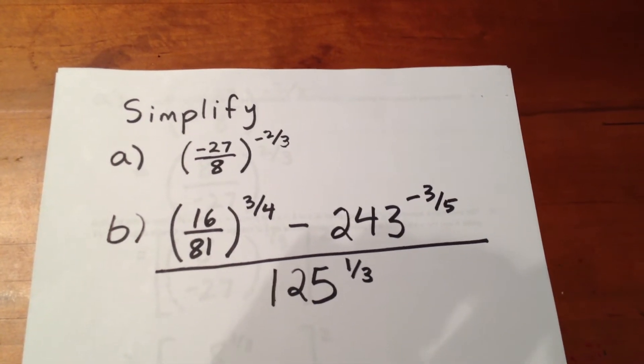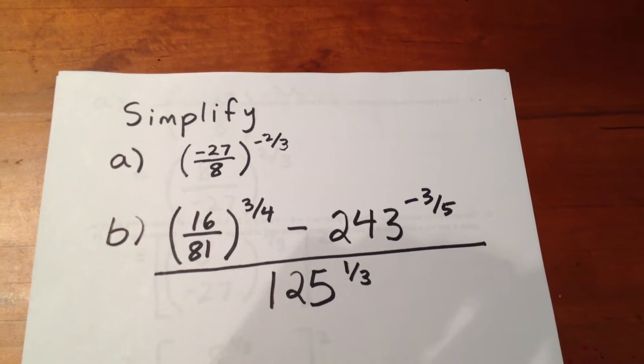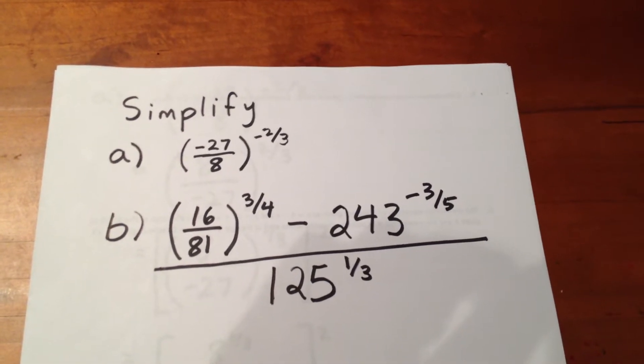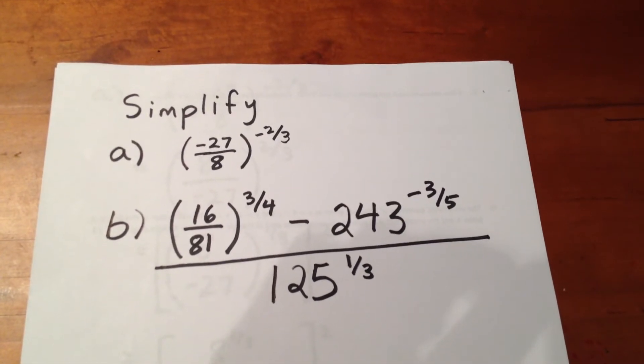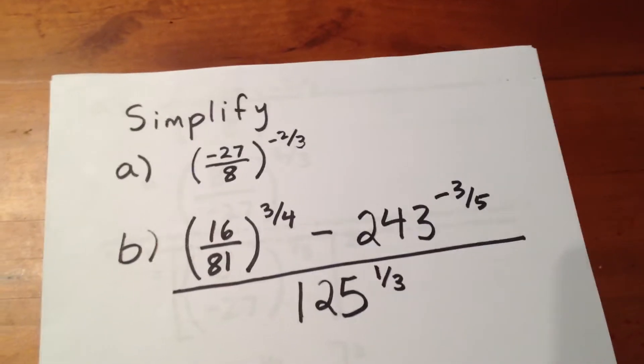Okay, in our first question, we're going to evaluate that power with the base of negative 27 over 8, and the exponent is negative two-thirds.